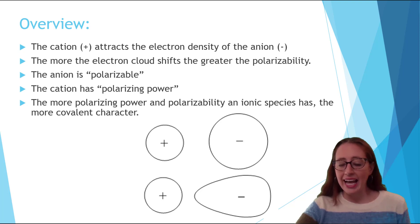In an ionic bond, a cation can attract some of the electron density of the anion. The ability to make this shift happen is the polarizing power. This shifts the electron cloud back toward the positive species a bit more. The more the electron cloud is able to shift, the greater the polarizability.